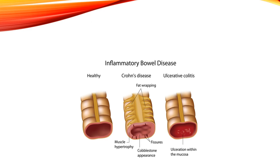A picture of inflammatory bowel disease shows a healthy bowel on the left, Crohn's disease in the middle with fat wrapping around the intestine, muscle hypertrophy, fissures, and a cobblestone appearance, and ulcerative colitis on the right, showing breakdown of the mucosal layer that eats through the tissue and can cause perforation.